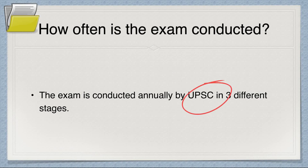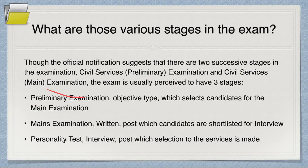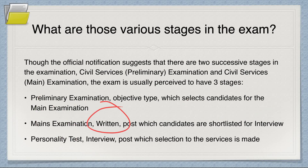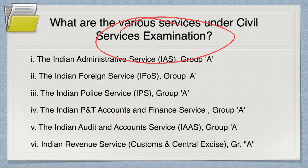The official notification suggests there are two successive stages, but in layman's terms we classify it into three stages: Preliminary, Mains, and Interview. The Preliminary examination is objective type and selects candidates for the Mains. The Mains is a written type after which candidates are shortlisted for the interview or personality test, following which selection to the services is made. According to UPSC, the interview is officially part of the main examination.